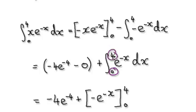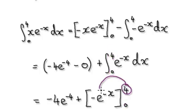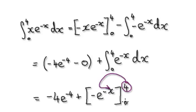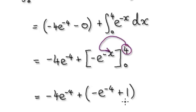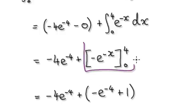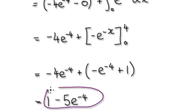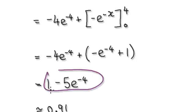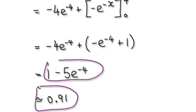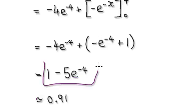Now we integrate from 0 to 4. Going through the normal process — substituting in — this whole thing gives us our result. Overall it equals approximately this value, and that is our final answer.